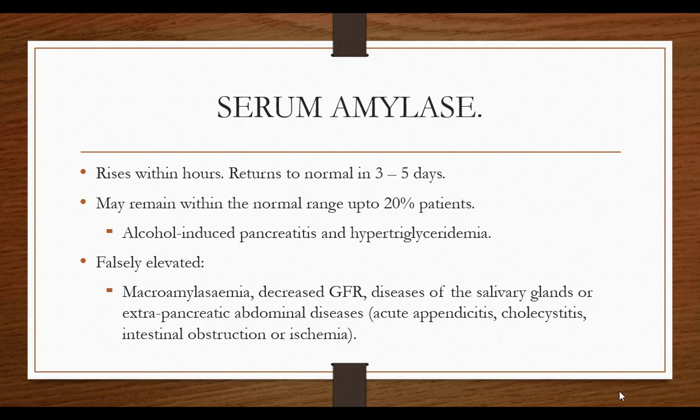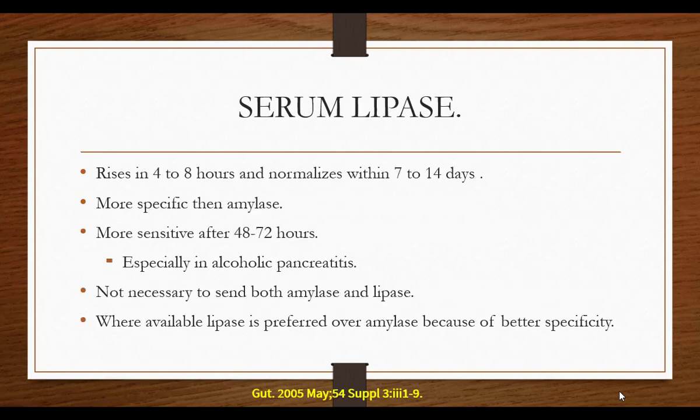Amylase can also be falsely elevated in conditions like macroamylasemia where amylases are clotted together, decreased GFR or renal insufficiency, diabetic ketoacidosis, or problems with the salivary gland — salivary amylase — or other abdominal diseases. Lipase starts elevating in four to eight hours and normalizes within seven to fourteen days, so it remains in the blood for a longer period. It is more specific and more sensitive than amylase, particularly after 40 to 72 hours when amylase is going down.